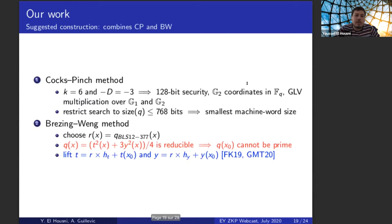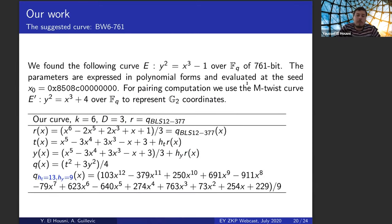So our work resulted in an elliptic curve that we called BW6-761, which has this equation, y squared equals x cubed minus one, which is defined over a field 761 bits. The seed is this one, and we have polynomial parameters of all the parameters.